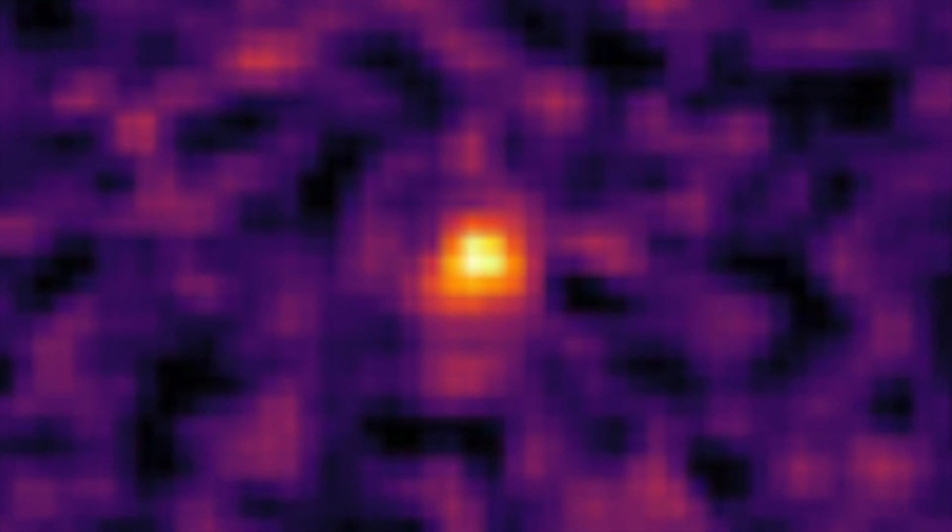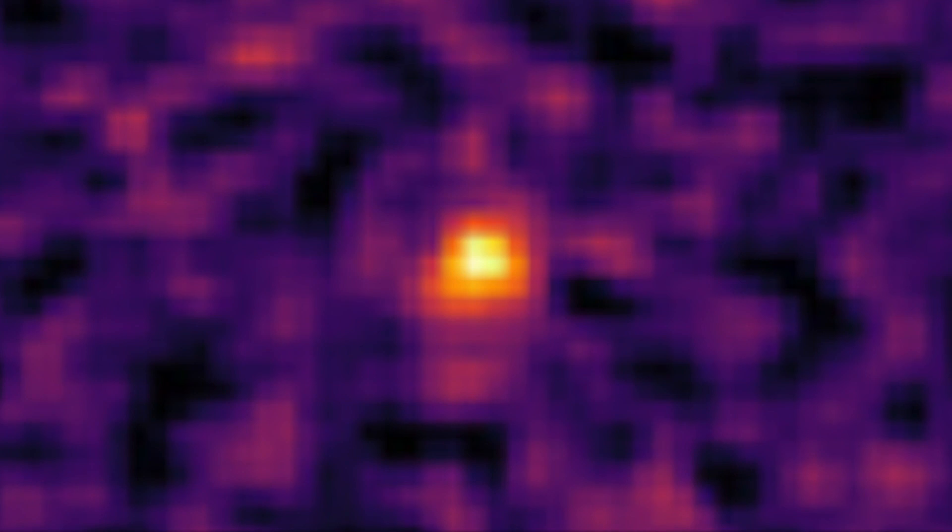Powerful hypernova 10.5 billion light-years away from Earth is the most distant star explosion ever observed. The most distant star explosion ever observed occurred over 10.5 billion light-years away. If we think about the speed of light, this means that the light from the hypernova has been traveling to us for about three-quarters of the time the universe has been in existence.